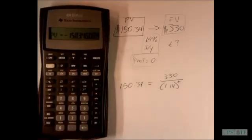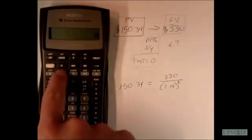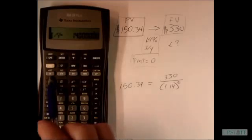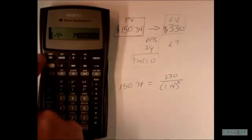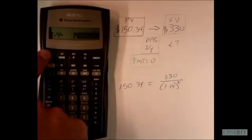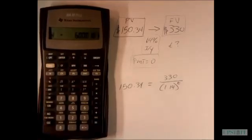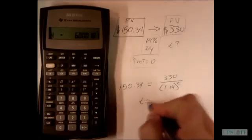Then we know we have a 14 percent interest rate, so it's 14 for the i over y. And then we're solving for n, the number of time periods, so we're going to hit compute n because that's what we're solving for. That's going to tell us that t is equal to six years.